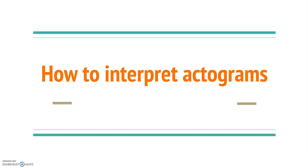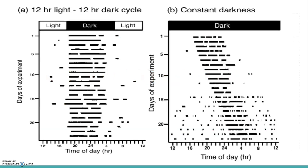How to interpret actograms. You might recognize these actograms from a past exam question on the activity of a flying squirrel. The black lines represent the activity of the squirrel. In graph A, the squirrel has been placed in constant conditions of 12 hours of light and 12 hours of darkness over a period of 25 days. In graph B, the external cue or zeitgeber has been removed, so the squirrel is in constant darkness. As the squirrel is active each day, this is showing a circadian rhythm, and also the activity is at night, so the behavior would be nocturnal.